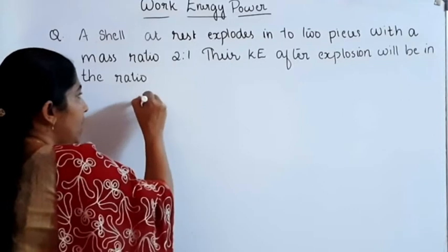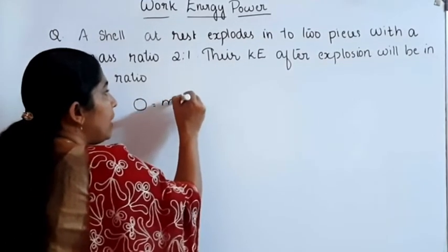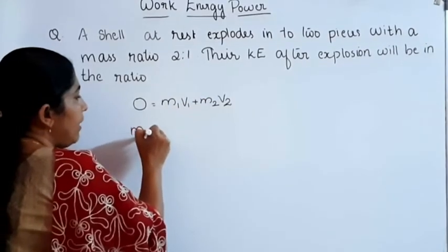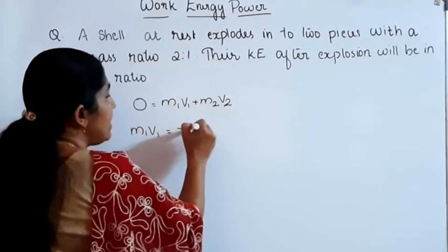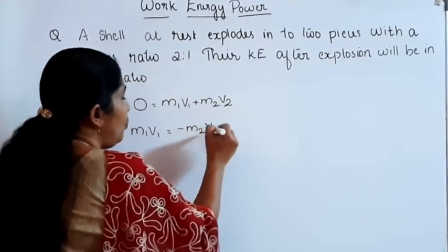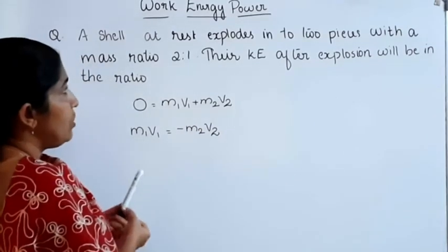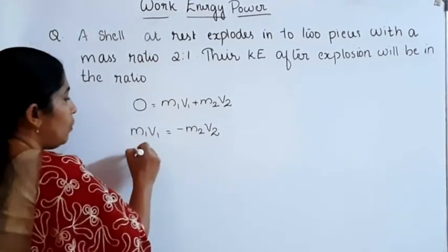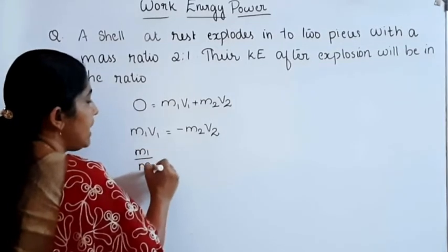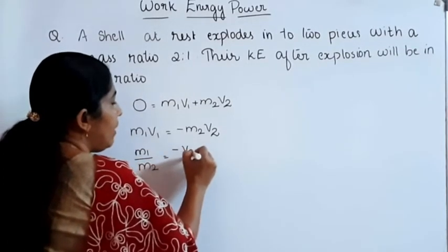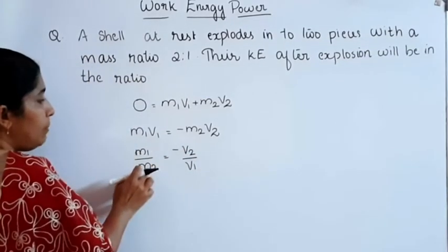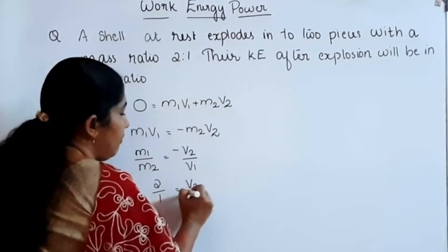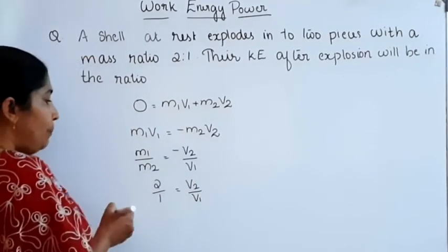Therefore M1V1 = −M2V2, meaning the two bodies move in opposite directions with equal magnitudes of momentum. From here, M1/M2 = V2/V1 in magnitude. Since M1/M2 = 2/1, we get V2/V1 = 2/1, so V1/V2 = 1/2.